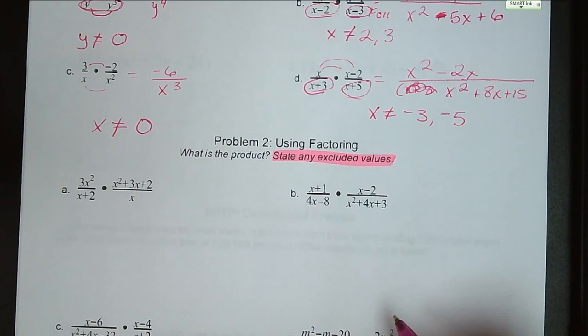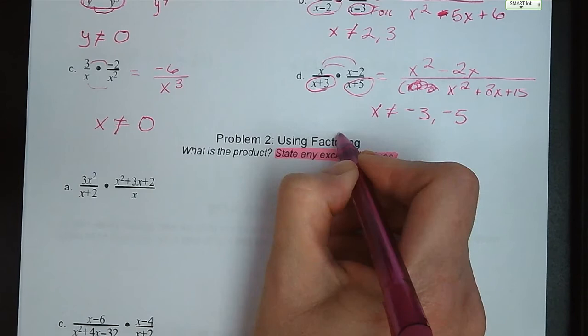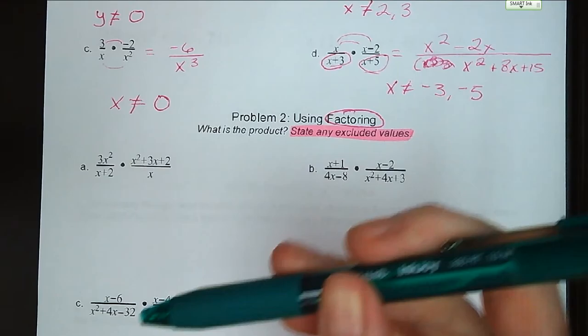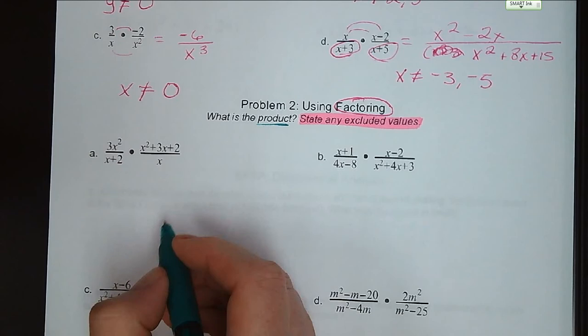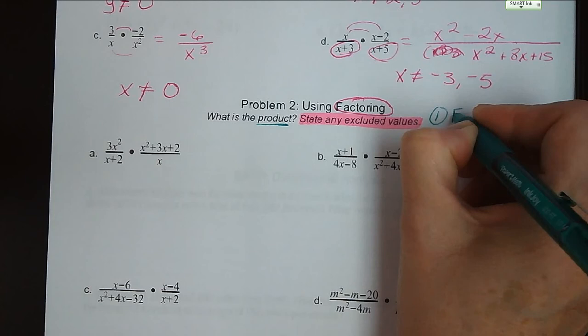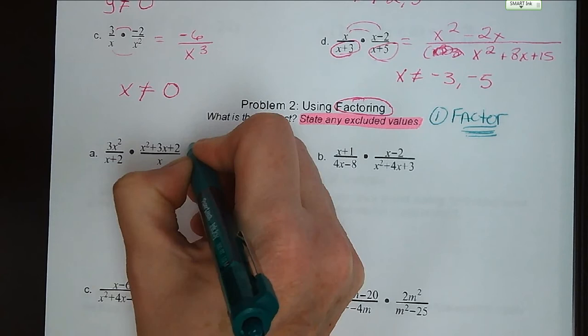Moving on to problem number 2, using factoring. Again, we want to know what is the product and state any excluded values. For these kind of problems, what I want you to do is start by factoring. You're going to multiply your two terms together, but you want to factor first, because we don't want to multiply and then factor out extra terms if we've got stuff that's going to cancel out in the first place.